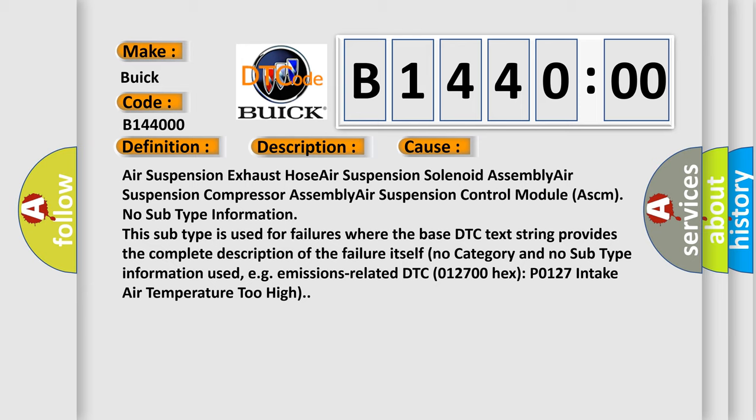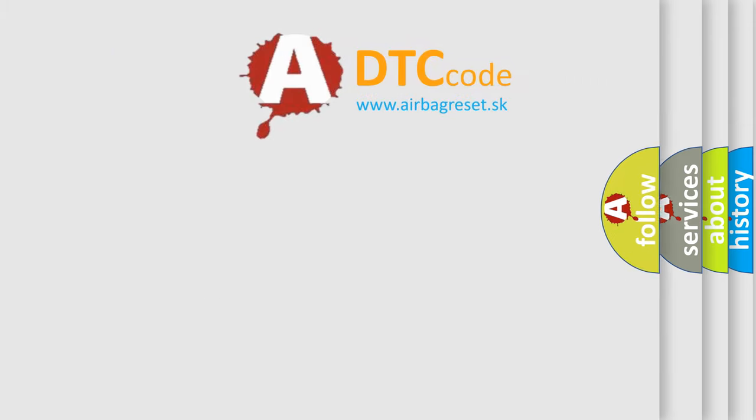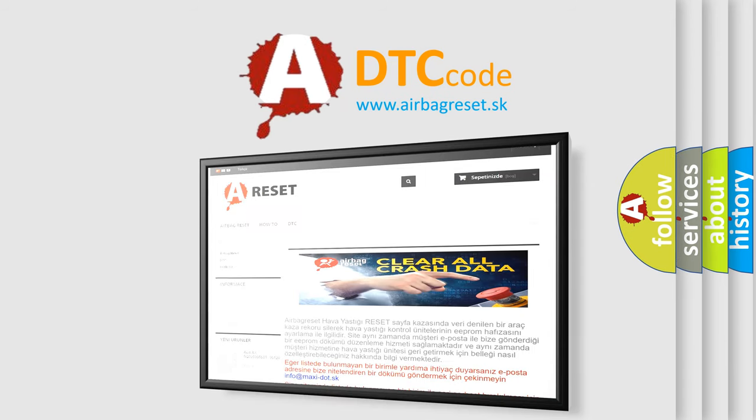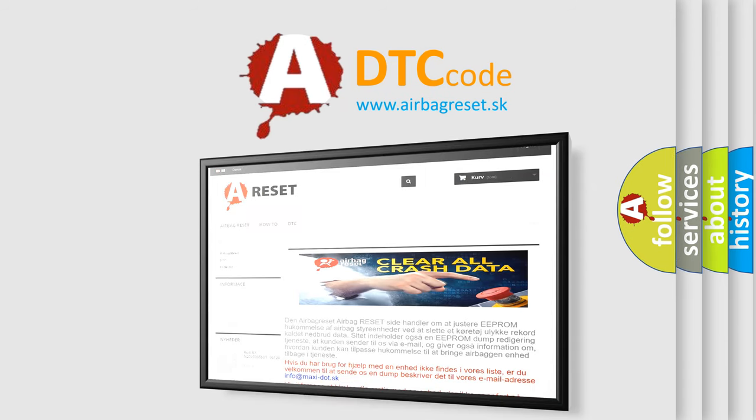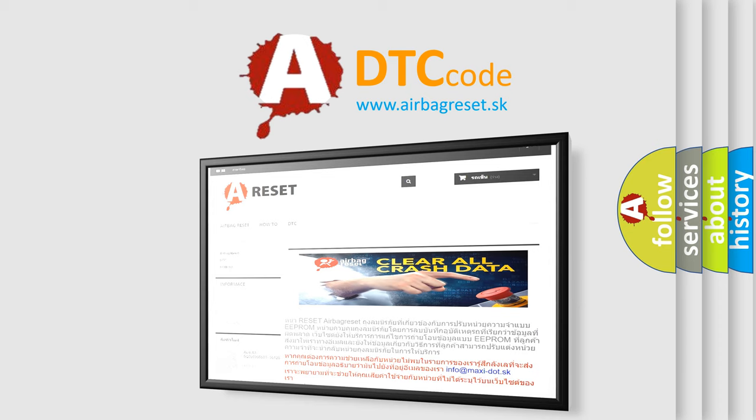No subtype information. This subtype is used for failures where the base DTC text string provides the complete description of the failure itself. No category and no subtype information used, for example, emissions-related DTC P0127: intake air temperature too high. The Airbag Reset website aims to provide information in 52 languages. Thank you for your attention and stay tuned for the next video.